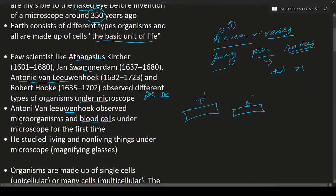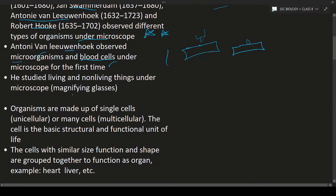Anthony van Leeuwenhoek was the first person to observe microorganisms and also blood cells. He studied living and non-living things under the microscope by using magnifying glasses — a piece of ground glass that he made into a magnifying glass. This magnifying glass is used to observe small objects, making tiny things visible as larger objects. He used magnifying glasses to observe microscopic organisms.